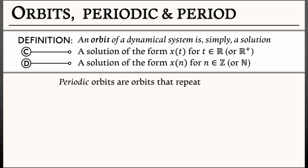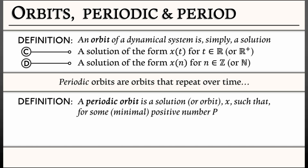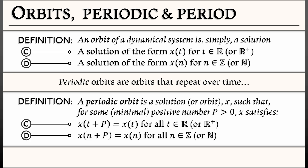What are periodic orbits? Periodic orbits are simply orbits that repeat over time. A periodic orbit is a solution x such that after time p, for some positive number p, x comes back to where it started. In continuous time, this means x(t + p) = x(t) for all values of t and some fixed minimal positive number p. In discrete time, this means x(n + p) = x(n) for all values of n and some fixed minimal positive number p.